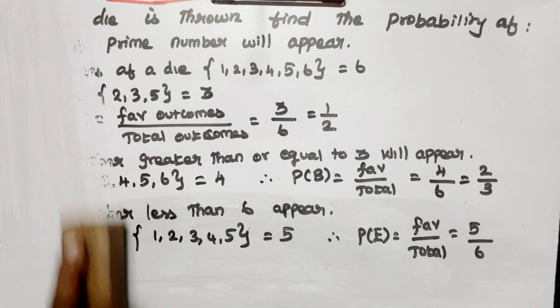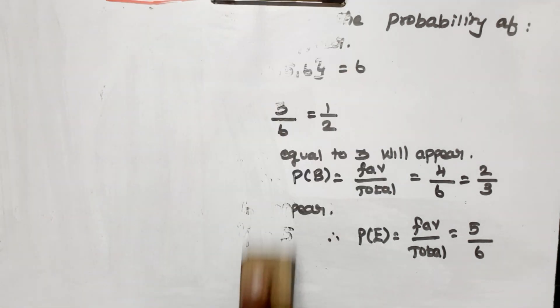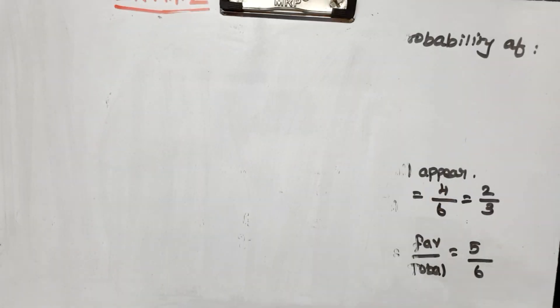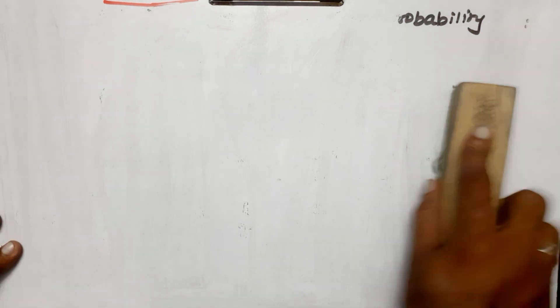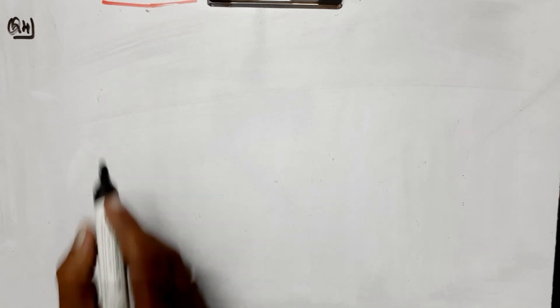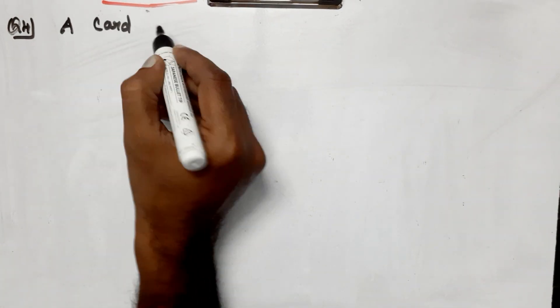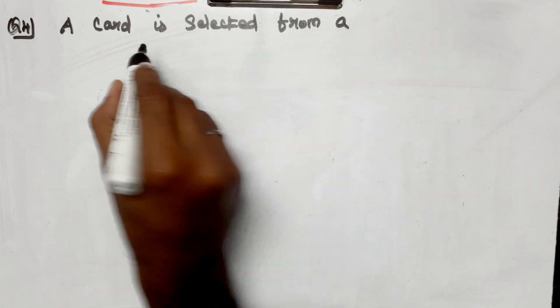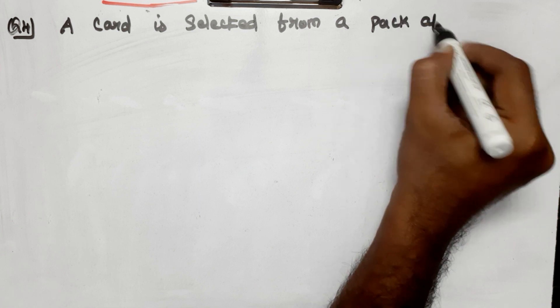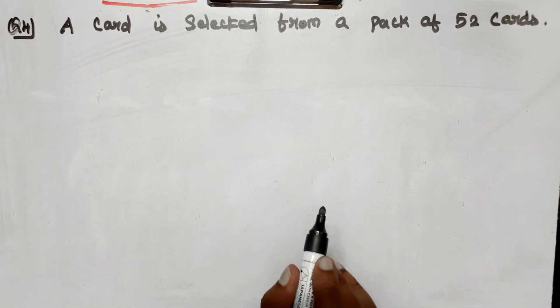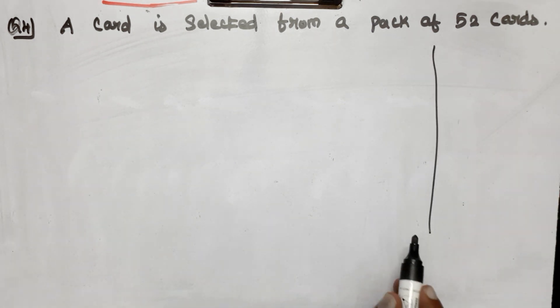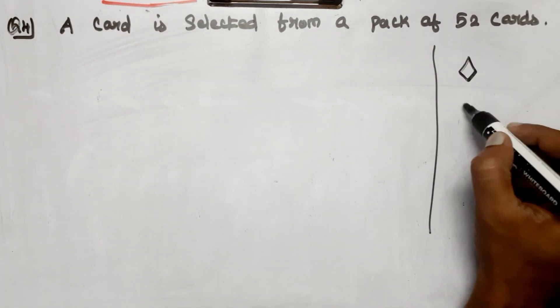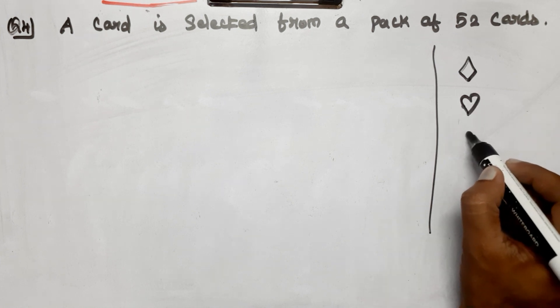Completing the die probability calculations. Outcomes range through 6, 7, 8, 9, 10, 11, 12, up to 16, giving us the final result. The answer is 16 by 15 — let's move on to the next problem.